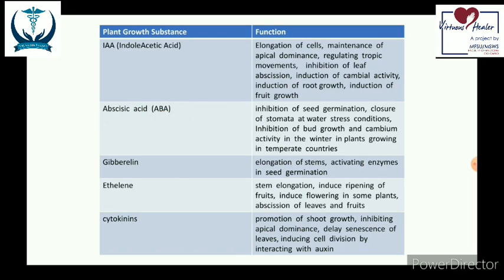Moving on to abscisic acid, which protects the plant by helping it resist adverse conditions. For example, it inhibits seed germination during stressful conditions, closes stomata under water stress, and inhibits bud growth and cambium activity in winter in temperate plants. A common feature is that it confers resistance to help plants tide over harsh conditions.